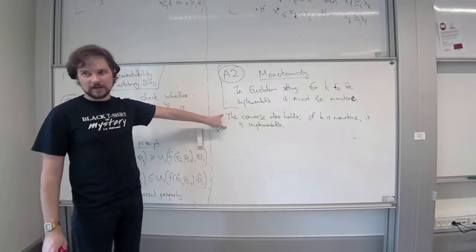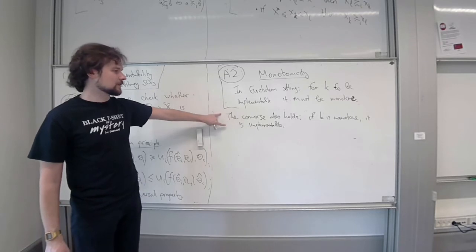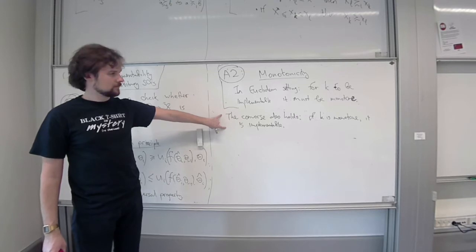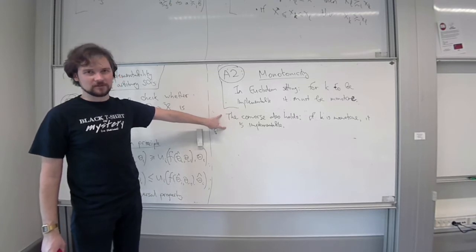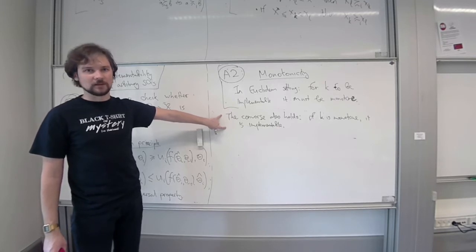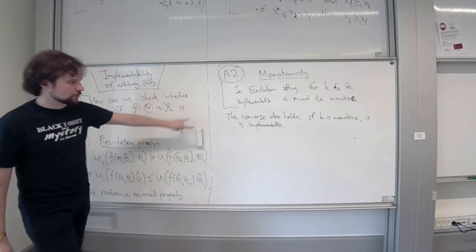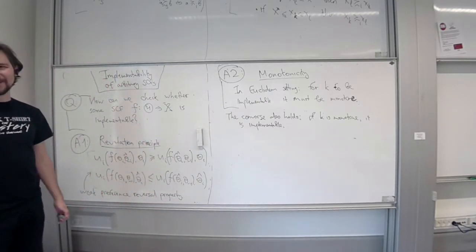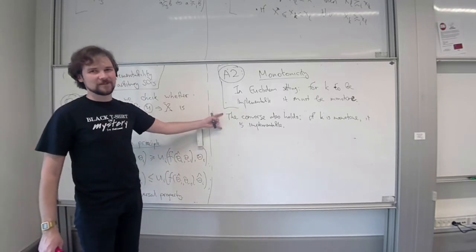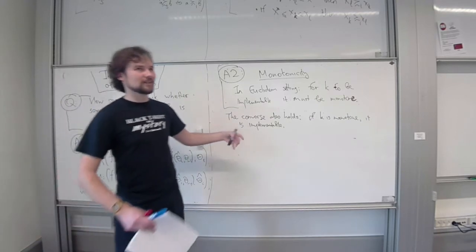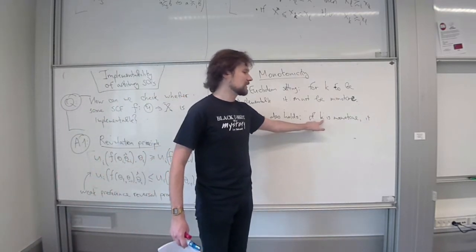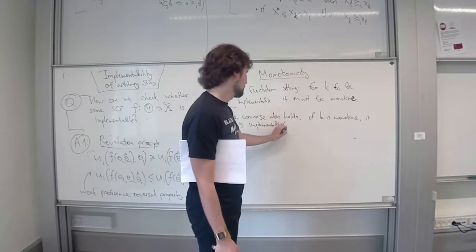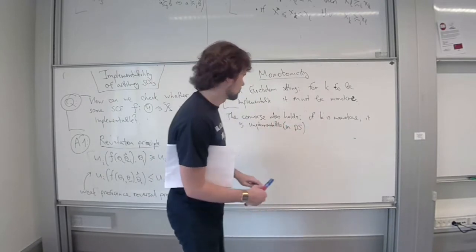The proof is quite simple. There's some mechanics involved, but the idea is that you have the revenue equivalence statement and you can use that to pin down the transfers. It was exactly what I tried to do in the beginning of the lecture when we were proving the statement for GBCG. I will ask you to prove this statement in the homework. Here by implementability, I mean in dominant strategy.